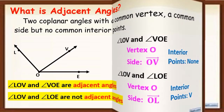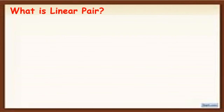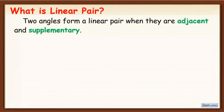How about linear pair? When we say linear pair, two angles form a linear pair when they are adjacent and supplementary. So linear pairs must be adjacent and supplementary. When we say supplementary, the measure of those angles is 180 degrees.